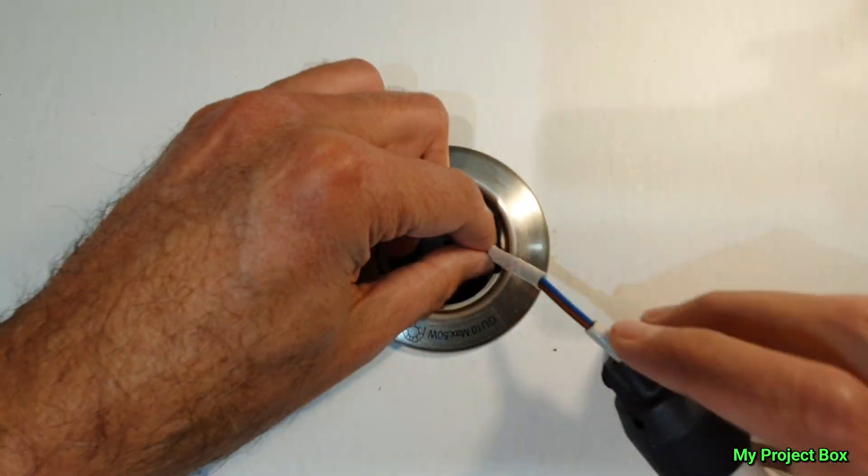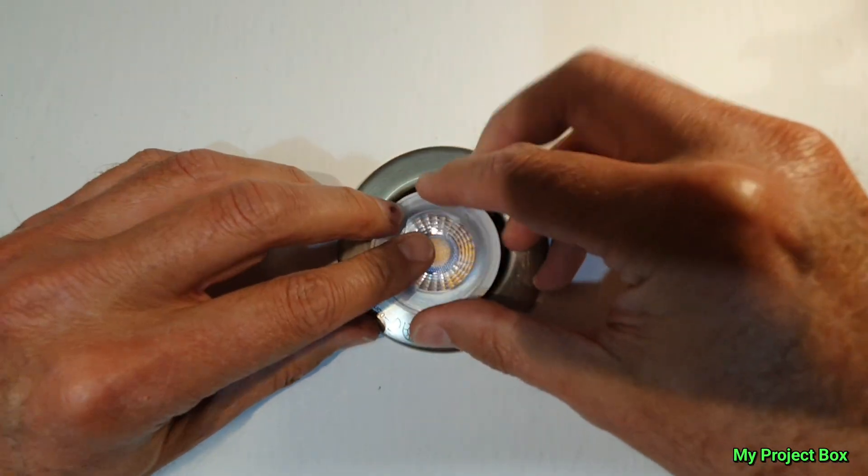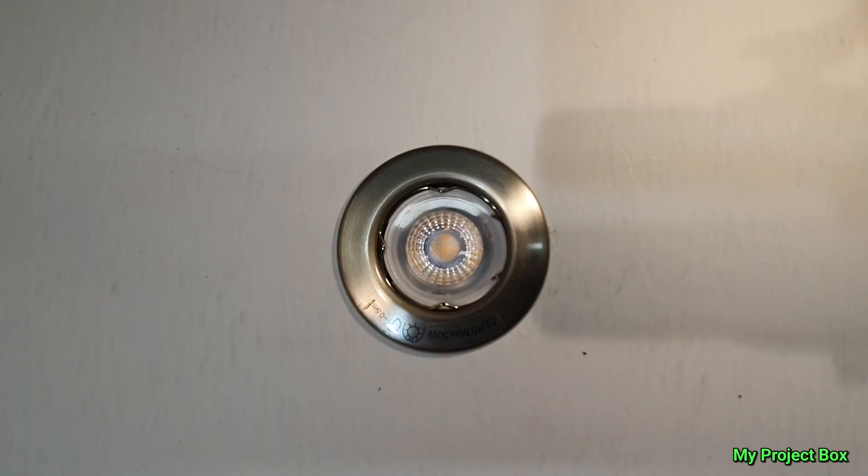And of course this can just go down the hole. This should just poke neatly down the hole. Alternatively you could take the whole light fixture out depending on what your light fixture is like. And there we go. We've installed it. It's that simple.